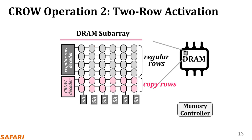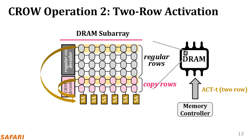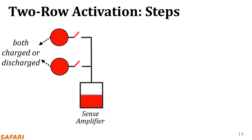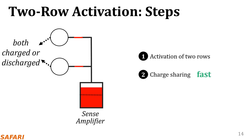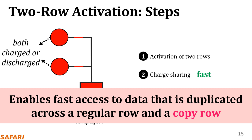The second operation that CROW enables is simultaneously activating a regular row and a copyrow. The memory controller performs multiple row activation by issuing the other new command ACT-T. When a regular and copyrow are activated together and the two rows contain the same data, this operation results in low latency activation. Both rows share their charge with the sense amplifiers, and as two cells together share more charge with the sense amplifier, the restoration completes sooner and read/write operations can be serviced sooner compared to conventional single row activation. The CROW substrate enables fast access to data that is duplicated across a regular and a copyrow.